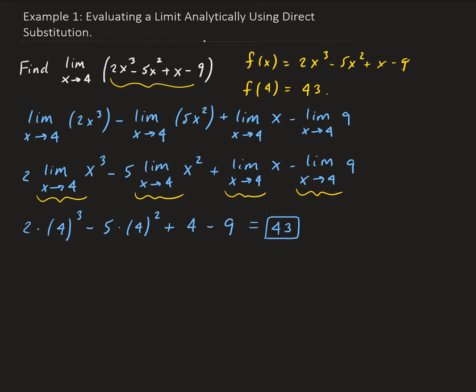And that's not surprising because we're working with a polynomial. And if you recall from pre-calc, polynomials are continuous everywhere. So the final answer is we get the limit as x approaches 4 for this function is 43.